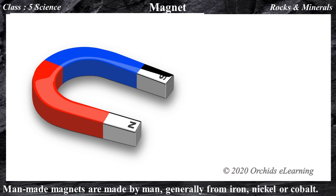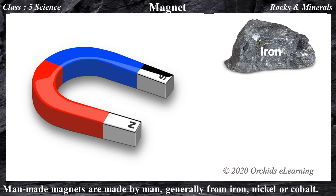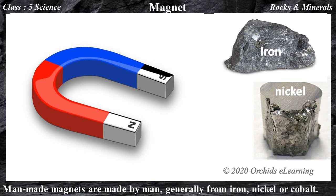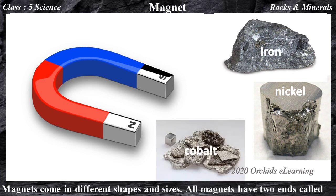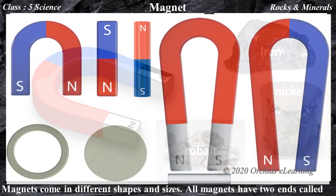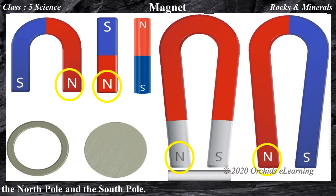Man-made magnets are made by man, generally from iron, nickel, or cobalt. Magnets come in different shapes and sizes. All magnets have two ends called the North Pole and the South Pole.